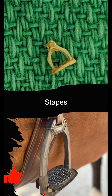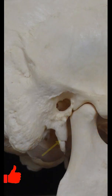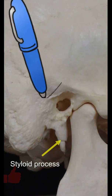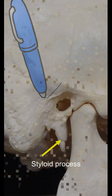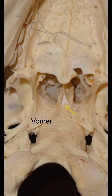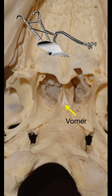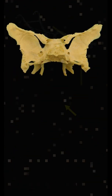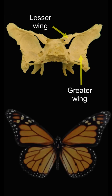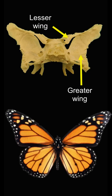The stapes, the medial ossicle of the middle ear, for looking like a stirrup; the styloid process of the temporal bone for looking like a stylus; the vomer and the nasal septum for looking like a plow; and the wings of the sphenoid — the greater and lesser wings — for looking like butterfly wings.